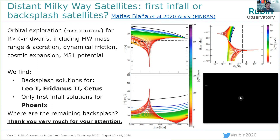We still need to find these other backsplash systems beyond the virial radius. This is important because the properties should be different — they may have the same gas fractions but they're not the same. Thank you very much.